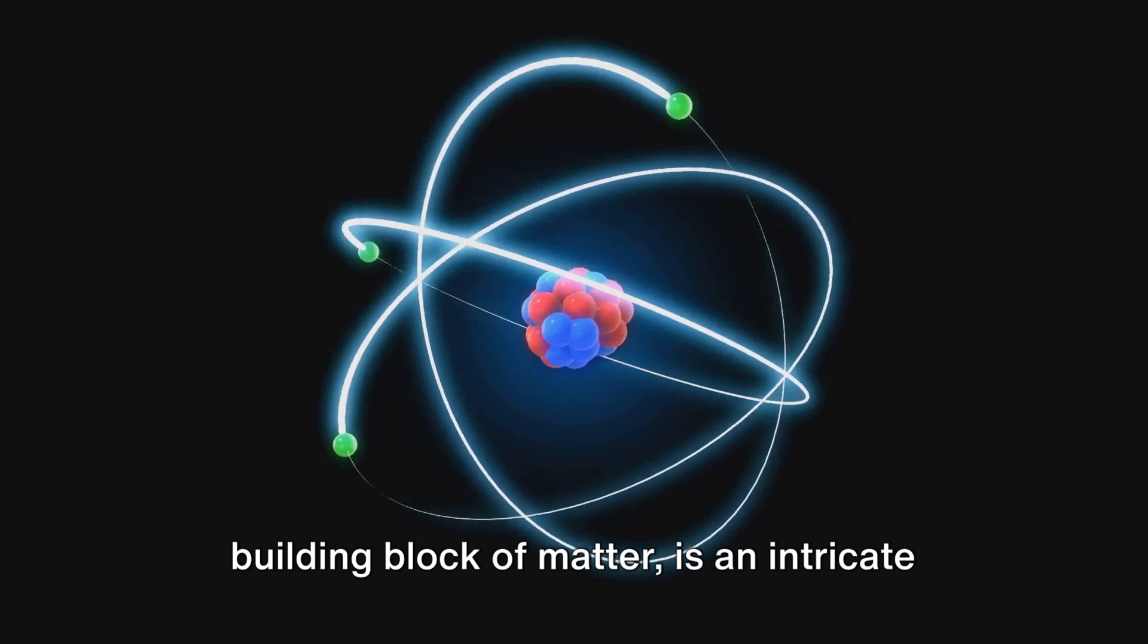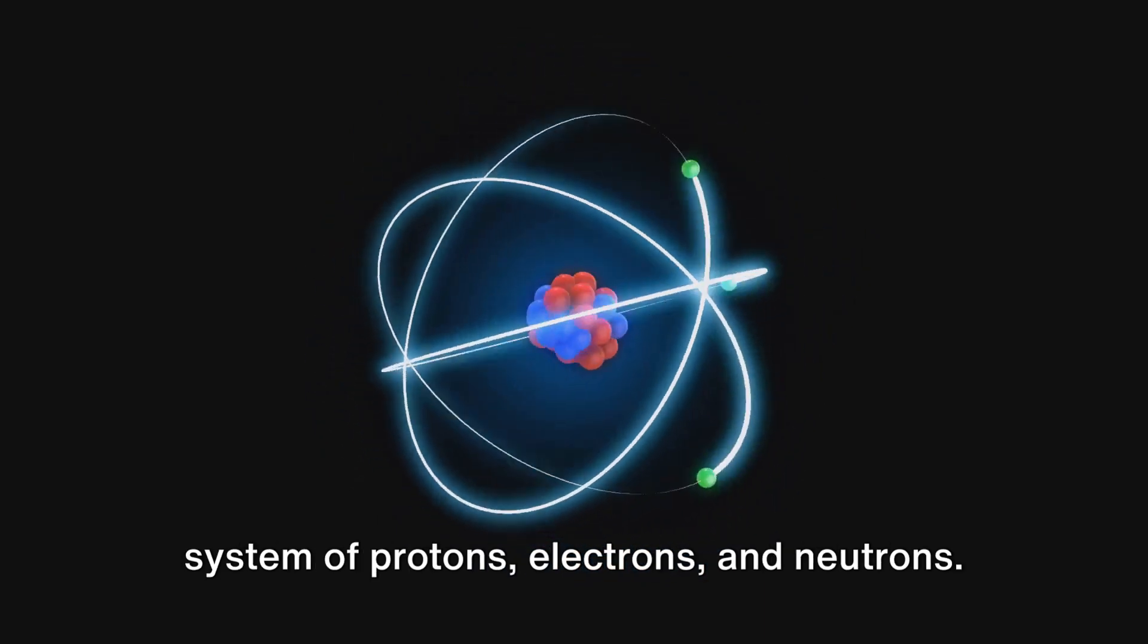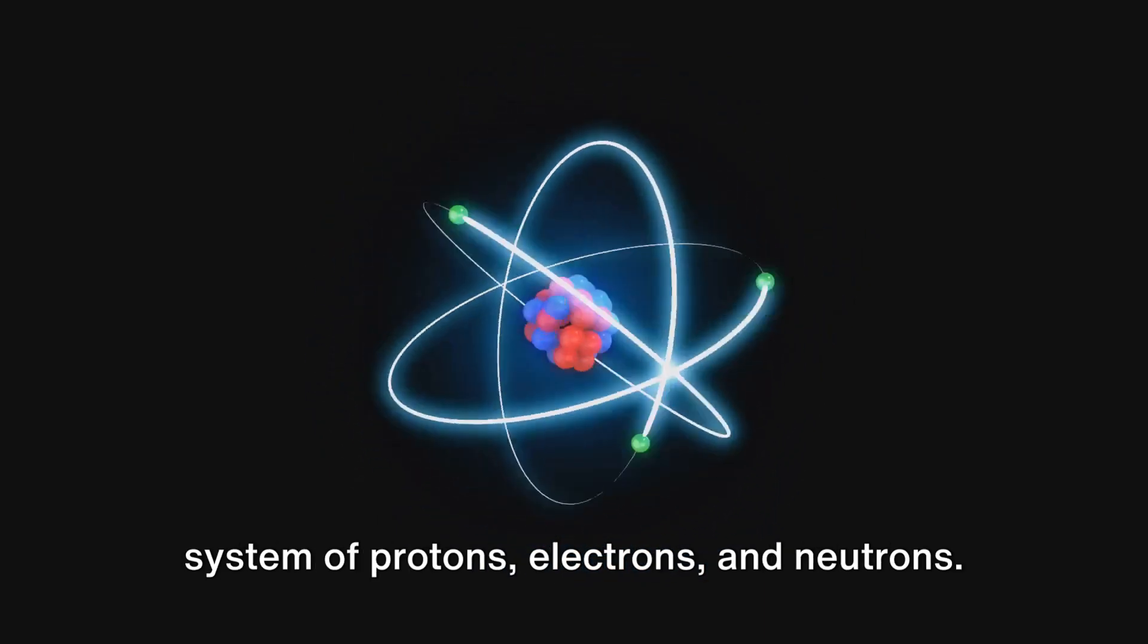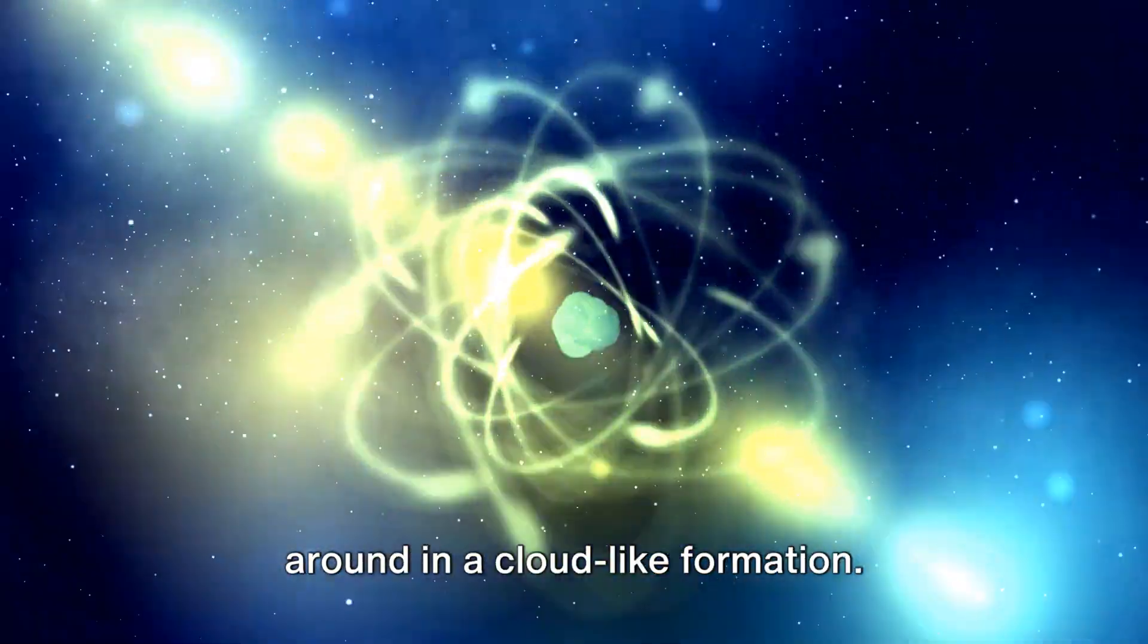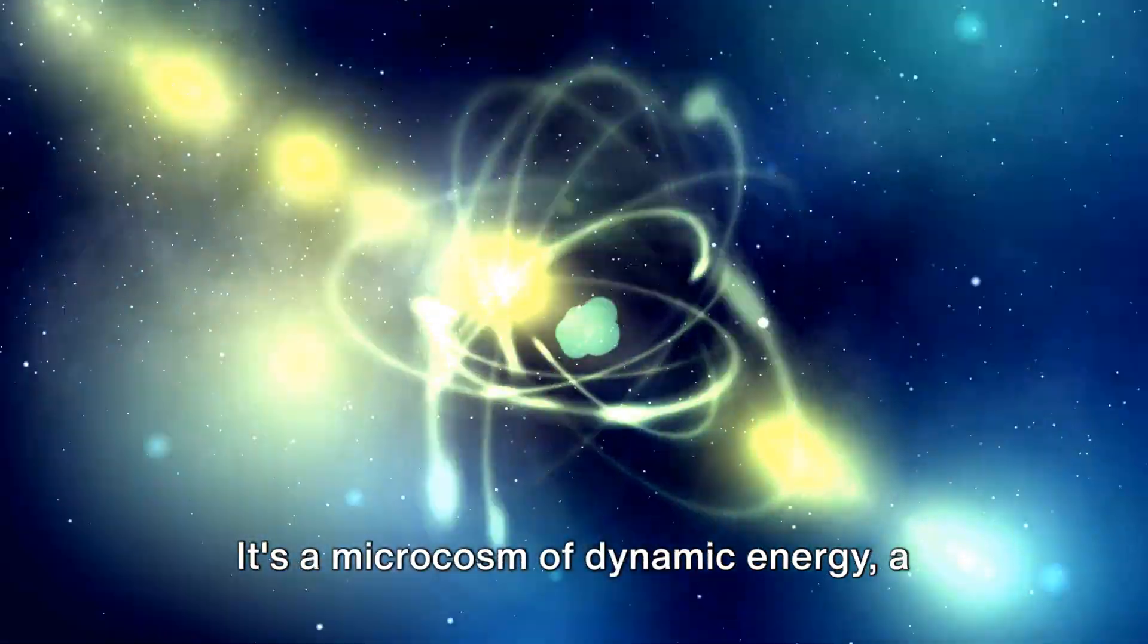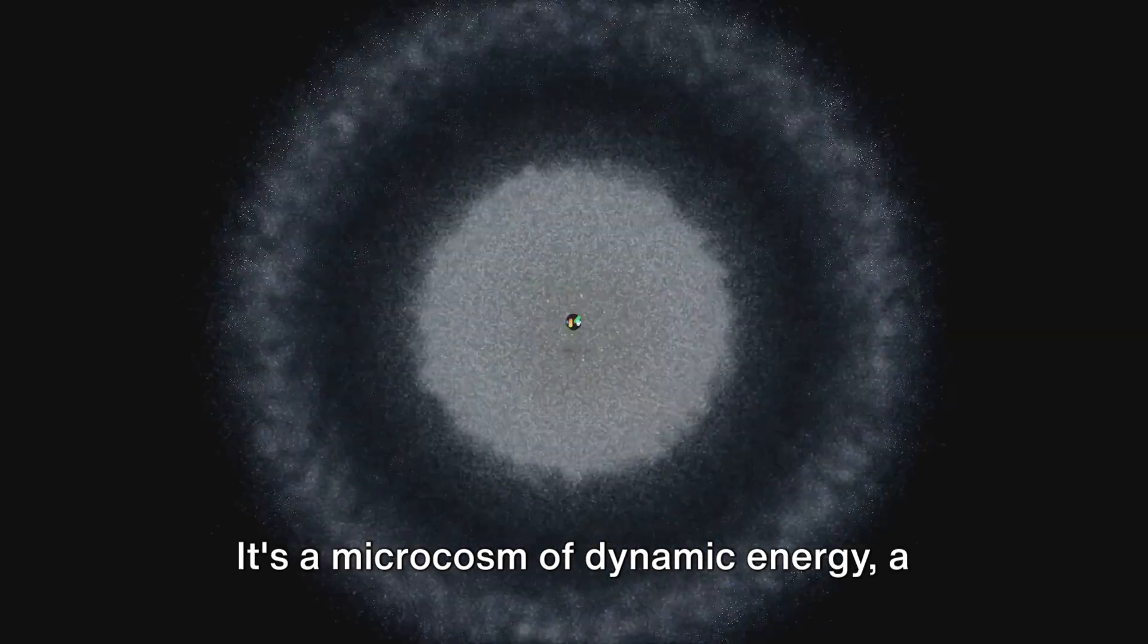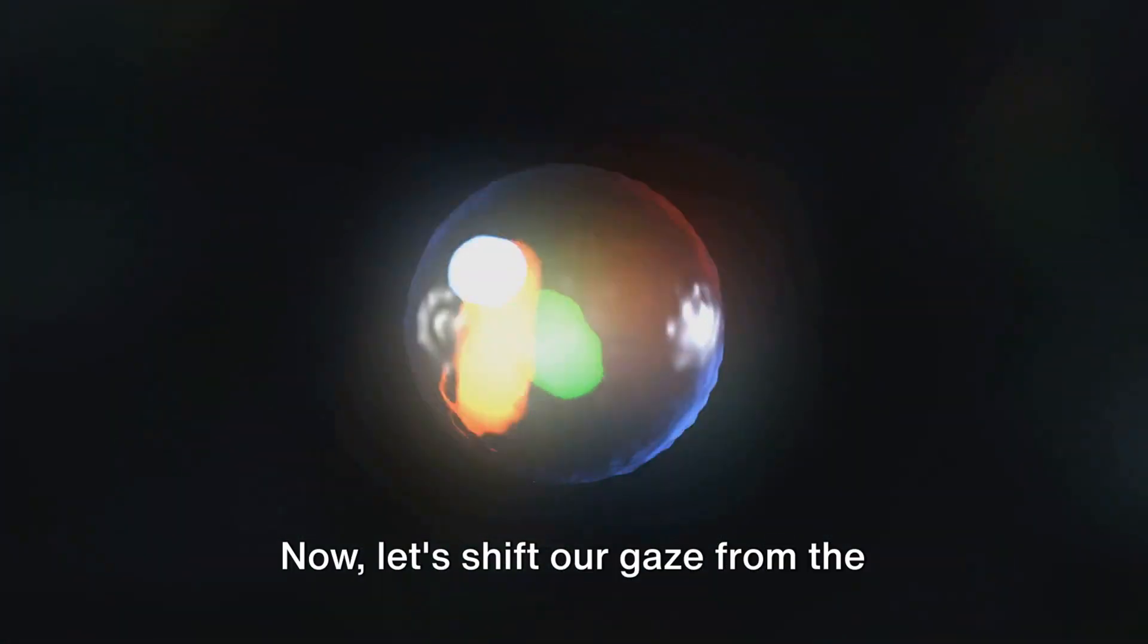The atom, the fundamental building block of matter, is an intricate system of protons, electrons and neutrons. Protons and neutrons form the nucleus, the atom's heart, while electrons whirl around in a cloud-like formation. It's a microcosm of dynamic energy, a tiny universe within itself.